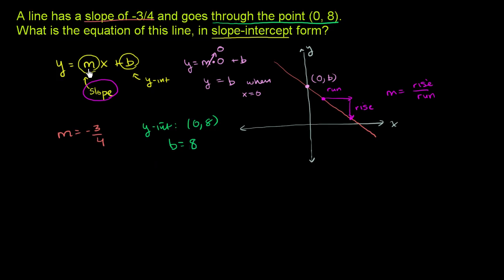So we know m is equal to negative 3 fourths, b is equal to 8. So we can write the equation of this line in slope intercept form. It's y is equal to negative 3 fourths times x plus b, plus 8. And we are done.